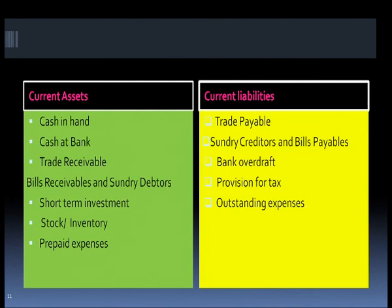A quick recap: current assets include cash in hand, cash in bank, trade receivables, short-term investments, stock or inventory, prepaid expenses, advance tax, and so on. Current liabilities include bills payable or trade payables, creditors, bank overdraft, provision for tax, and outstanding expenses. Working capital is defined as current assets minus current liabilities. In the liquidity ratio, we look at the proportion of current assets to current liabilities.